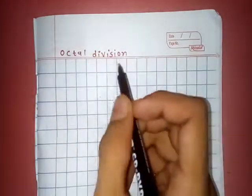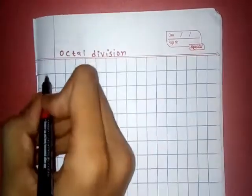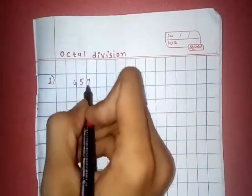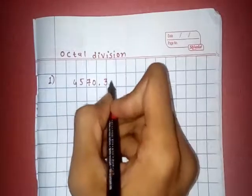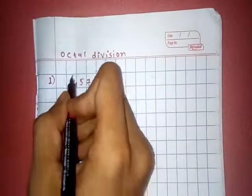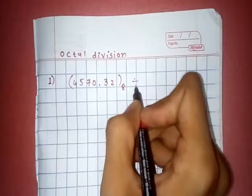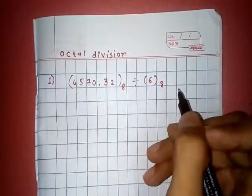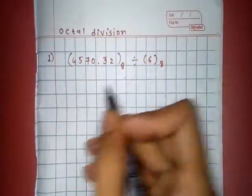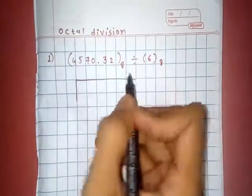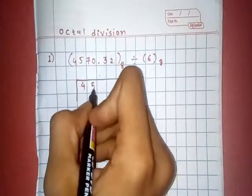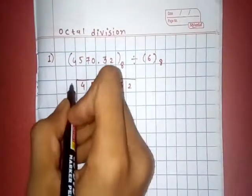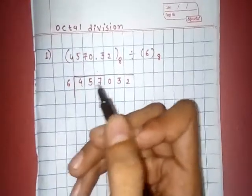Now take a basic example. First example, we take 4570.32 in octal divided by 6, which is also in octal. Same as basic division, we put 4570.32 divided by 6.